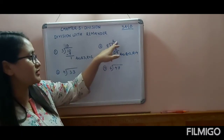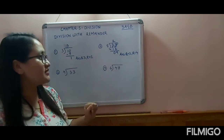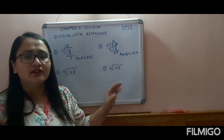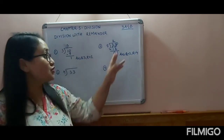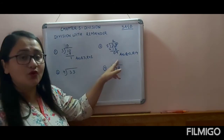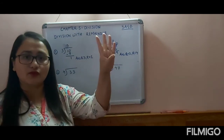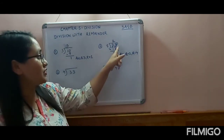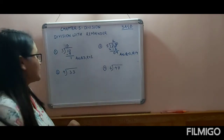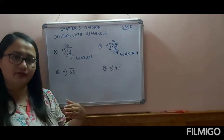Let's check: 2 times 8 is 16, plus 4 is 20. You got your answer correct. Now let's do the next sum.